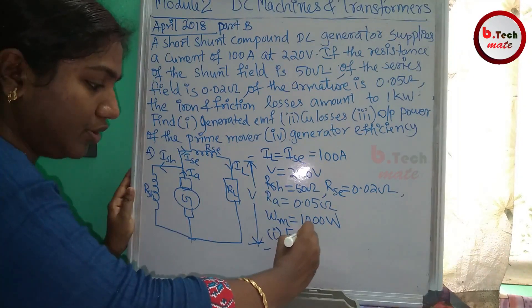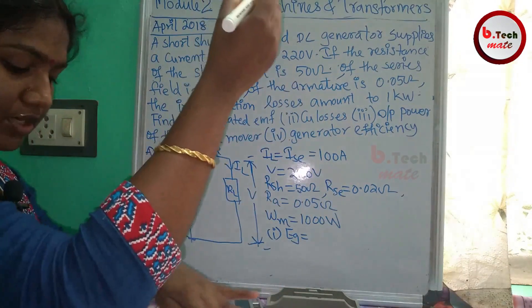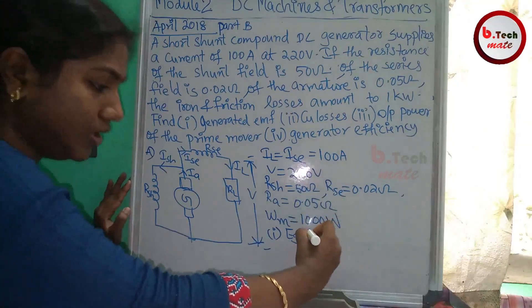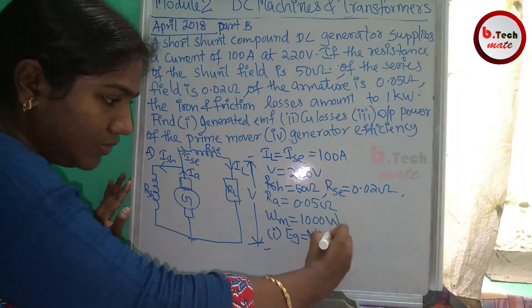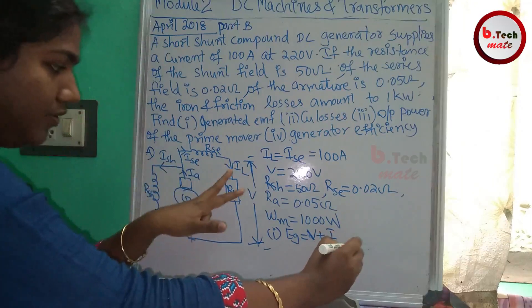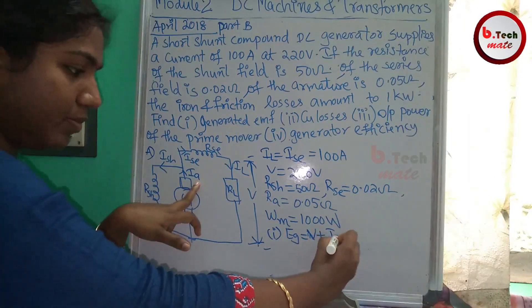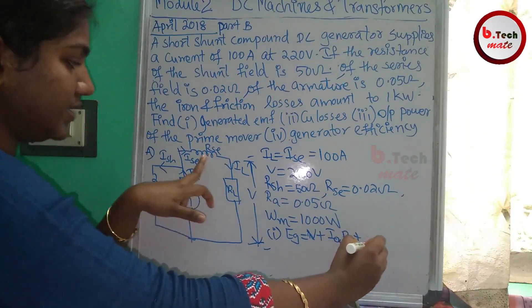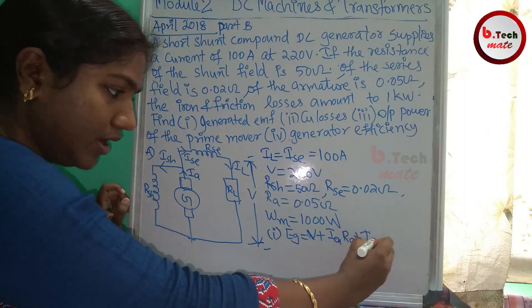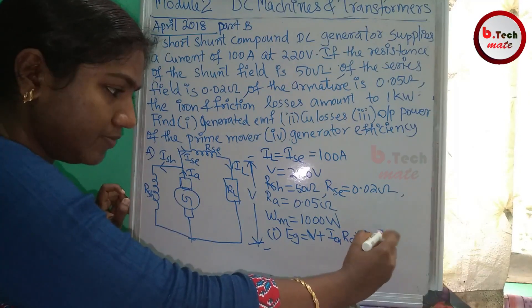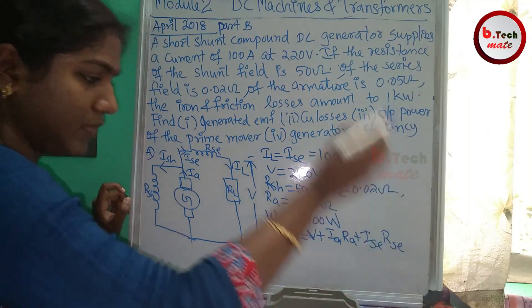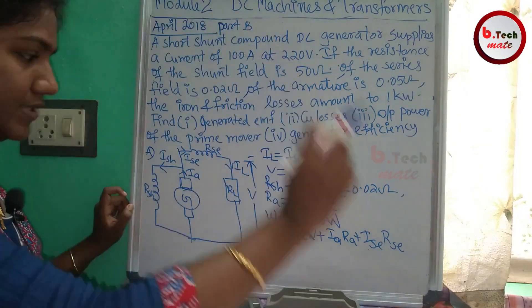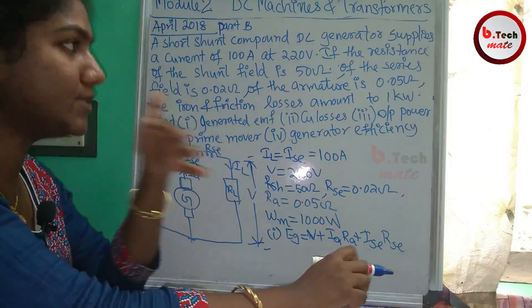Now let's work with the short shunt compound machine. The generator EMF equation is: EG equals V plus IA·RA plus ISC·RC.